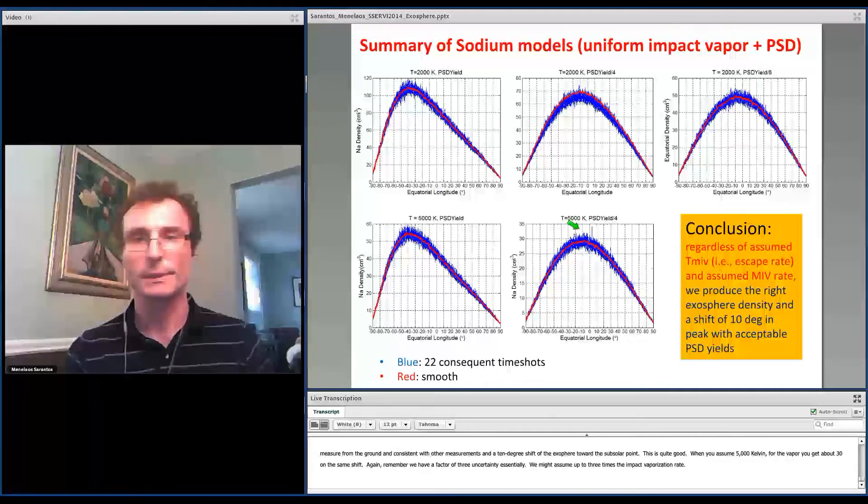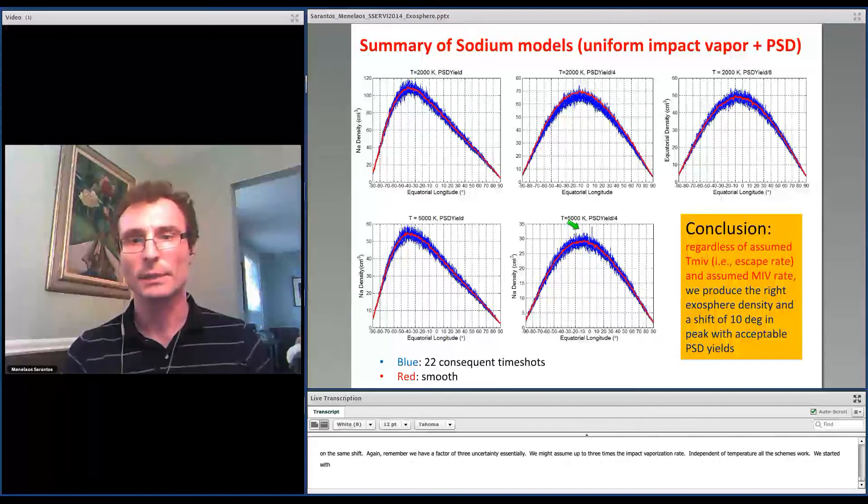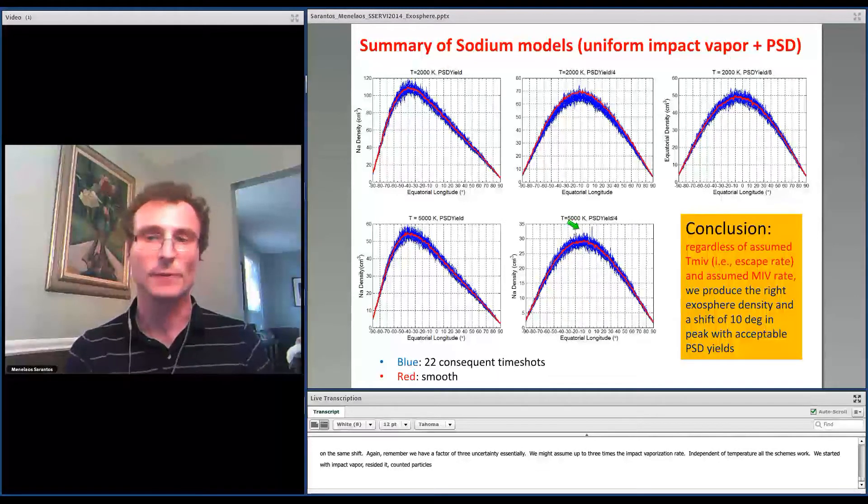We started with impact vapor, we recycled it, we counted particles until the photon ionized, and we still produced the right order of magnitude and shift. So this is an acceptable scheme.